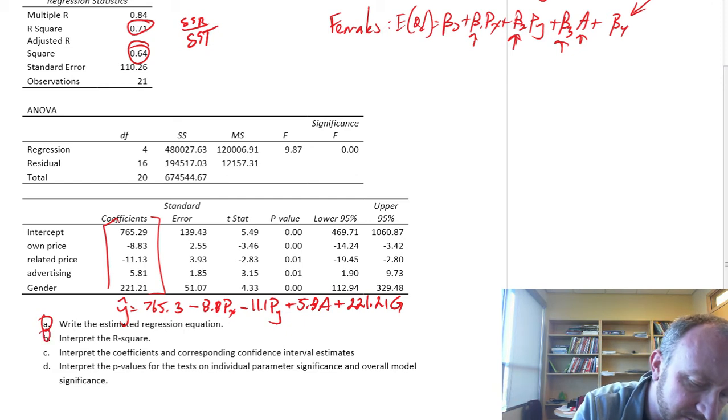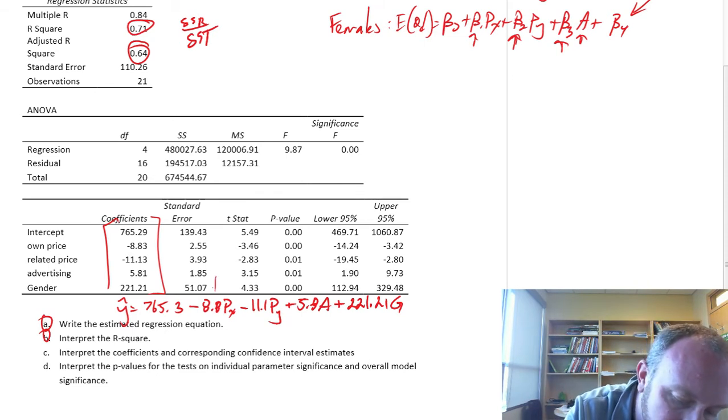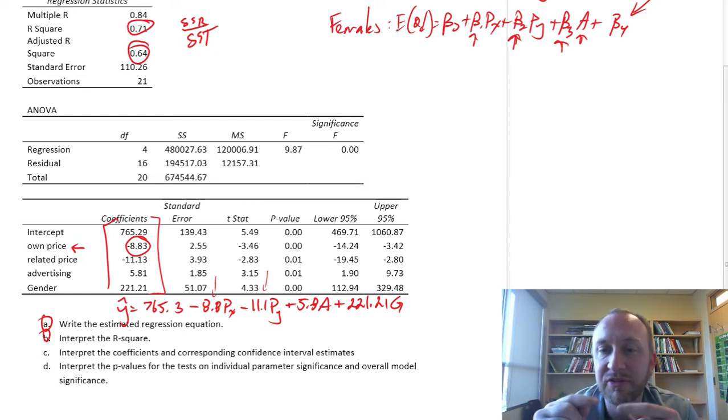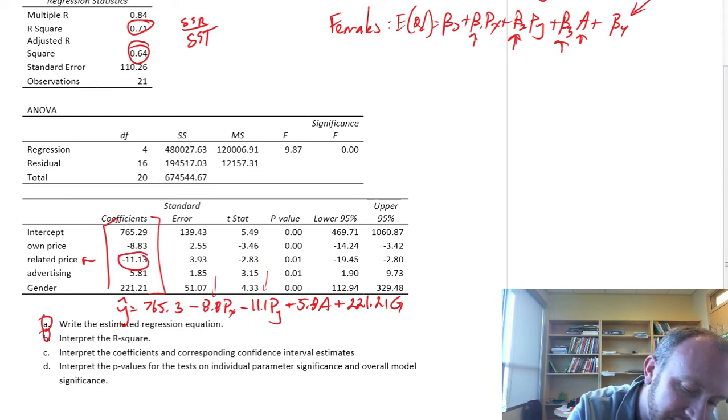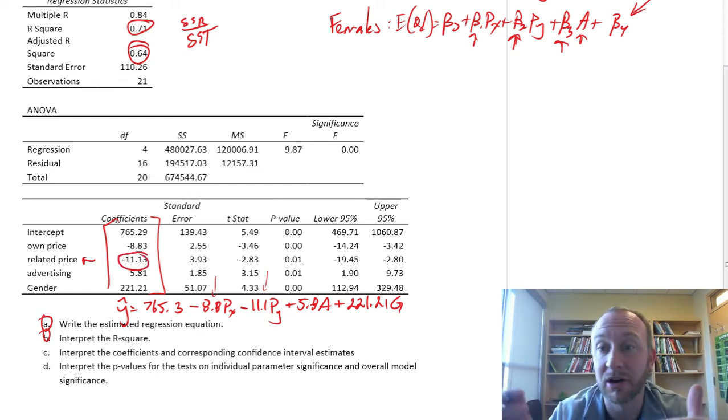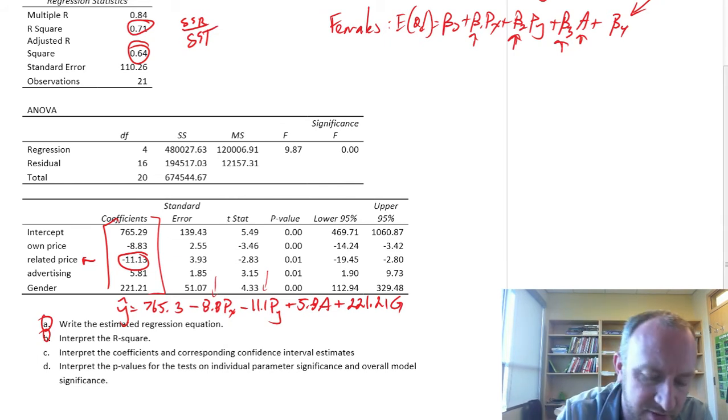Part C: interpret the coefficients and confidence interval estimates. Each of these partial slopes—8.8, 11.1—are all per unit changes. If the price changes by one dollar, the effect on quantity demanded is negative 8.8. For every dollar that the price of that related good goes up, quantity demanded for this good goes down 11.1 units. So these two goods must be complements.